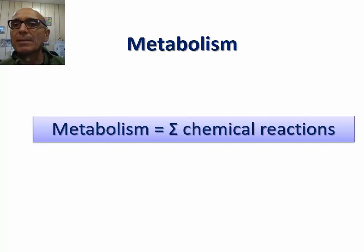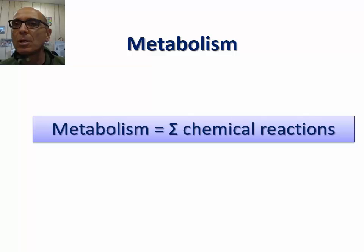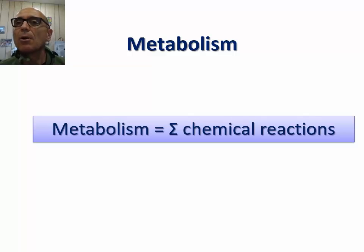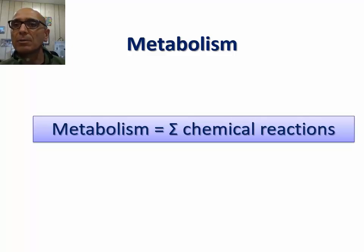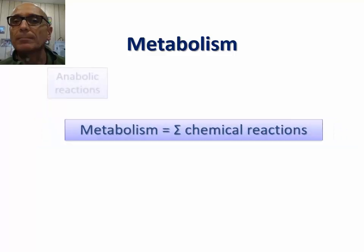Let's start by defining metabolism. Metabolism is defined as the sum of all chemical reactions or energy conversions occurring in a cell. Metabolic reactions exist in two broad categories, known as anabolic and catabolic.